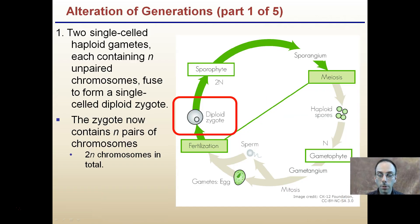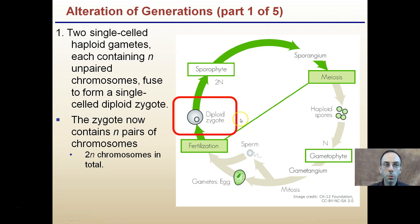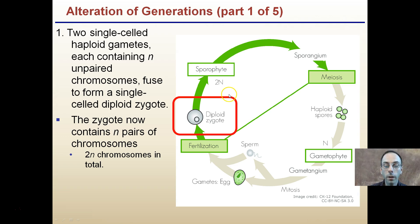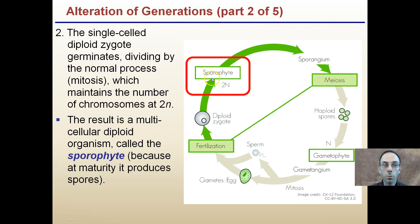Here's a detailed image walking through the steps. First, two single-celled haploid gametes, each containing n unpaired chromosomes, fuse to form a single-celled diploid zygote through fertilization. This zygote now contains n pairs of chromosomes, which is 2n total. Then the single-celled diploid zygote germinates, dividing by mitosis, which maintains the chromosome number at 2n, resulting in a multicellular diploid organism called the sporophyte, because at maturity it produces spores.